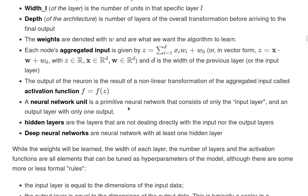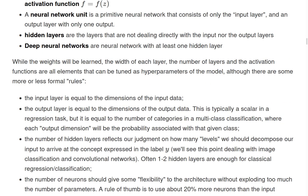So the activation function works on what is being computed as aggregated input. Neural network units have just one input layer and one output layer. Hidden layers are those that are not in direct contact with the input or the output. And the word deep neural networks refer to neural network architectures that have at least one hidden layer.